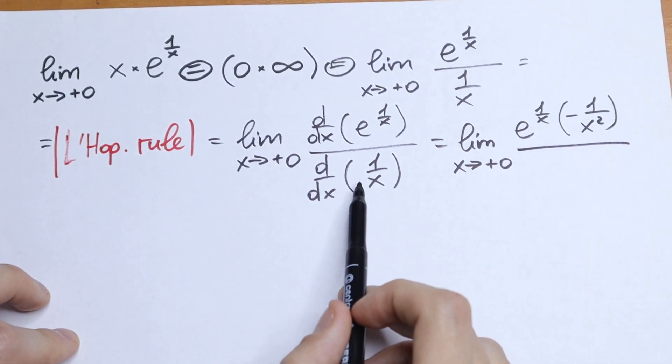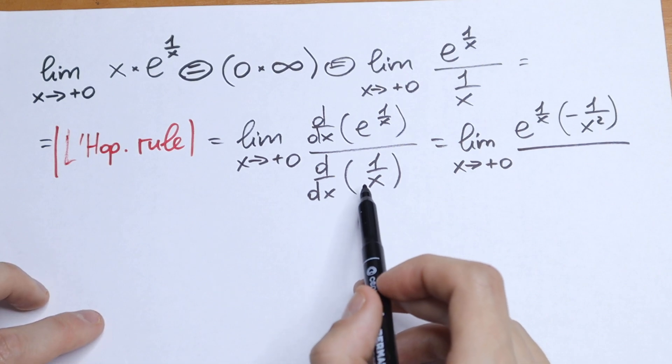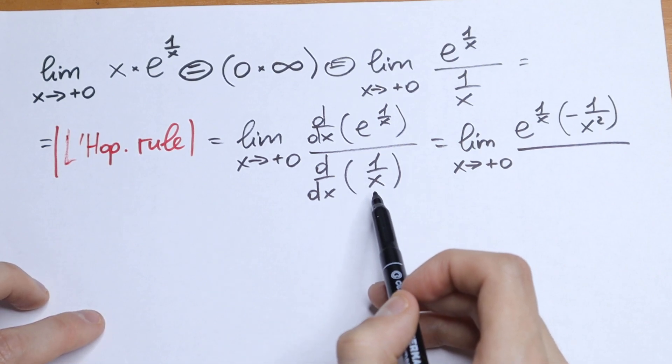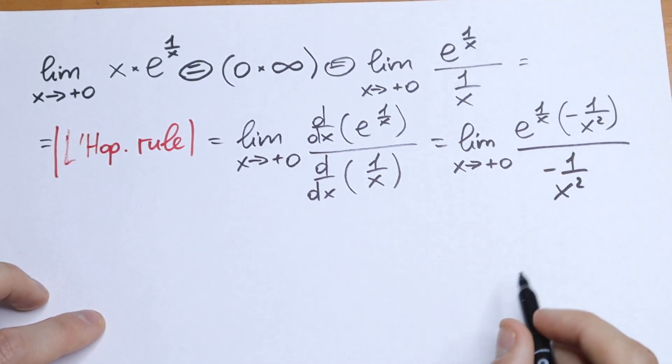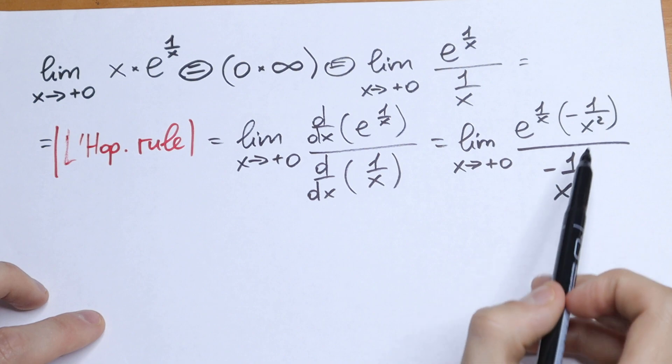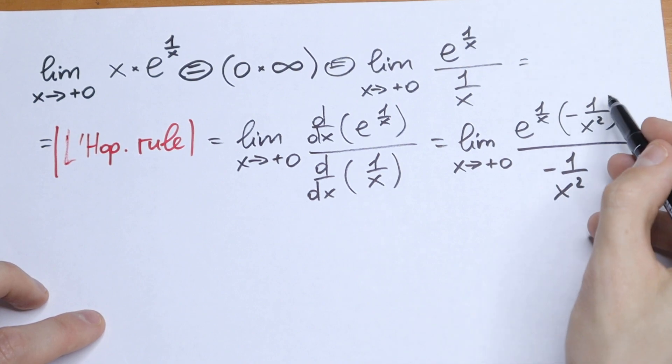And in our denominator we will have a classic rule. Derivative of 1 over x will be equal to minus 1 over x squared. As you can see, this minus 1 over x squared and this expression we can cancel.